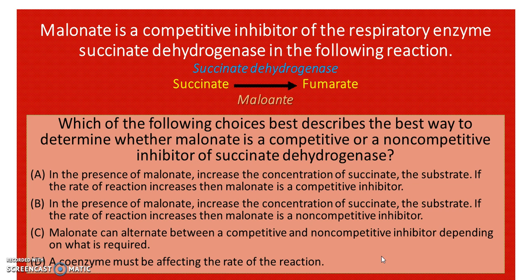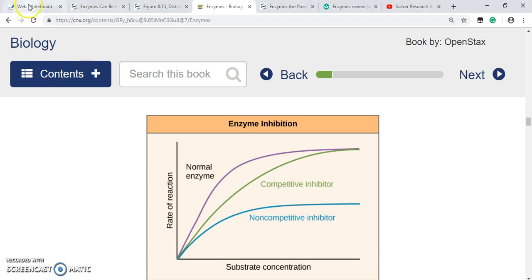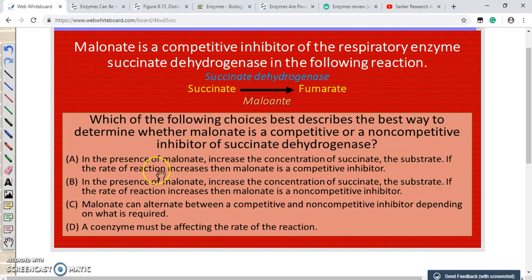Hope by now you have already figured it out. Let us discuss it together. In order to answer this question, we will have to know what is a competitive inhibitor, what is a non-competitive inhibitor, what is a coenzyme, and how the rate of enzyme-catalyzed reactions are affected.